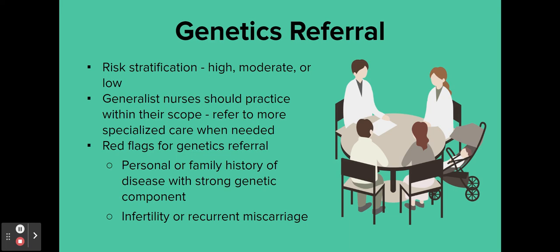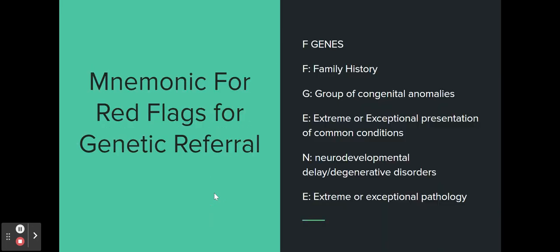Red flags for referral include: a personal or family history of disease with a strong genetic component — for example, Von Willebrand's disease, which is a bleeding disorder, or a father diagnosed with Huntington's disease, which is autosomal dominant. When you hear those things, you should be thinking this person may need a referral. Infertility, recurrent miscarriage, poor obstetric outcomes, recurrent stillbirths, and developmental disabilities are all red flags.